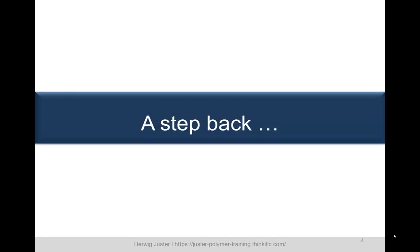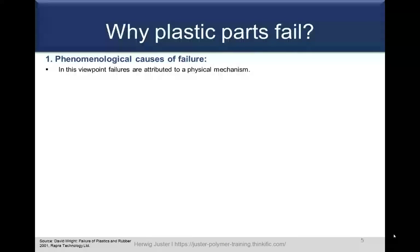First, let's take a step back and discuss why plastic parts fail. There was a study done by Mr. Wright, and he investigated the failure mechanism of over 5000 plastic parts. He found out that you can place these failures in two main pillars: the phenomenological causes and the human-related causes. Phenomenological causes, for example, can be attributed to physical mechanisms — a good example is environmental stress cracking.